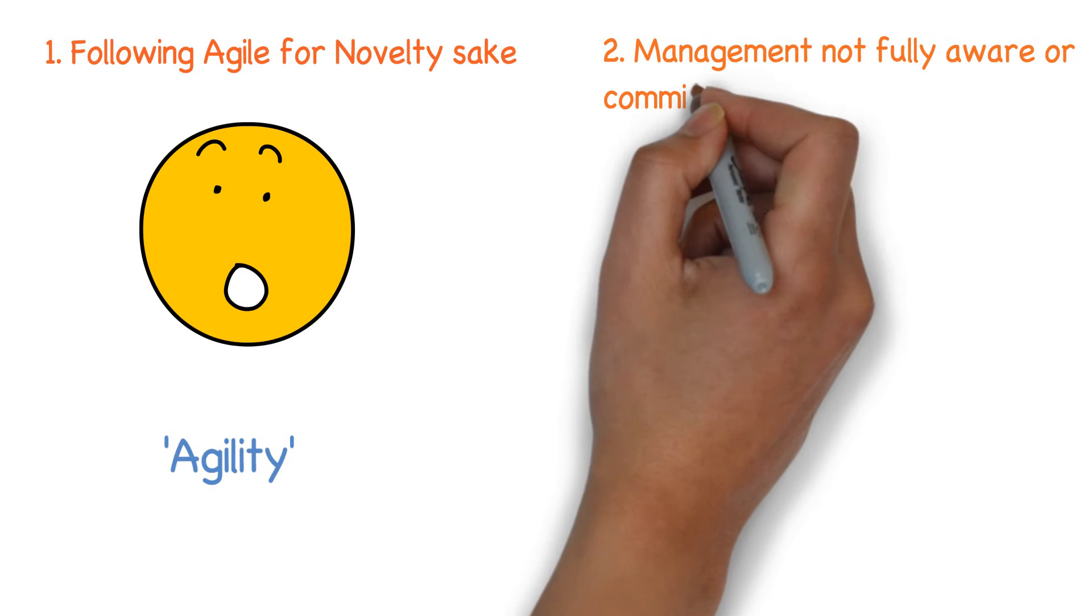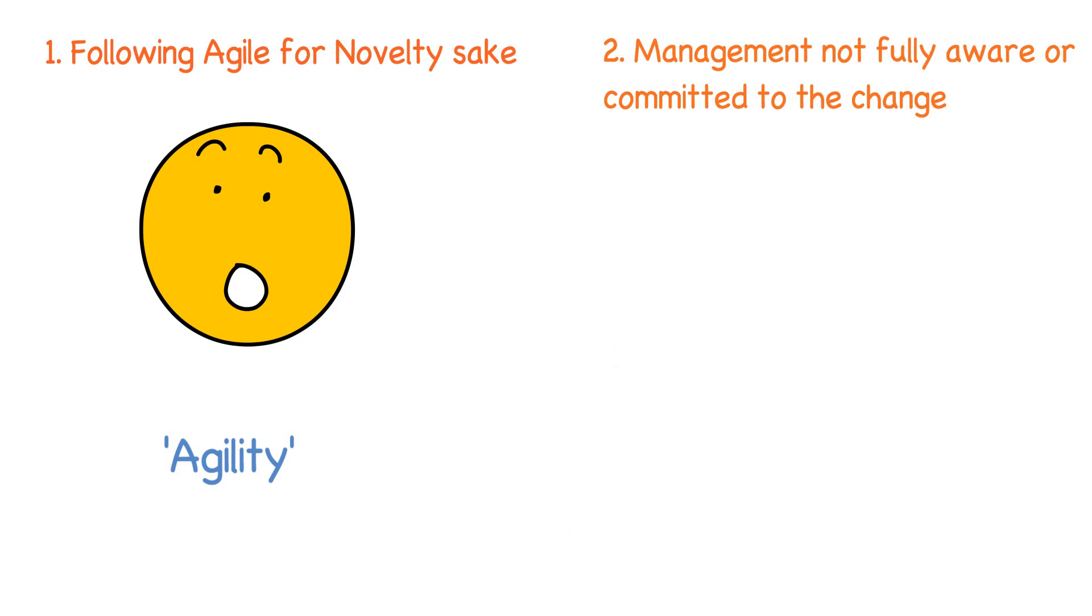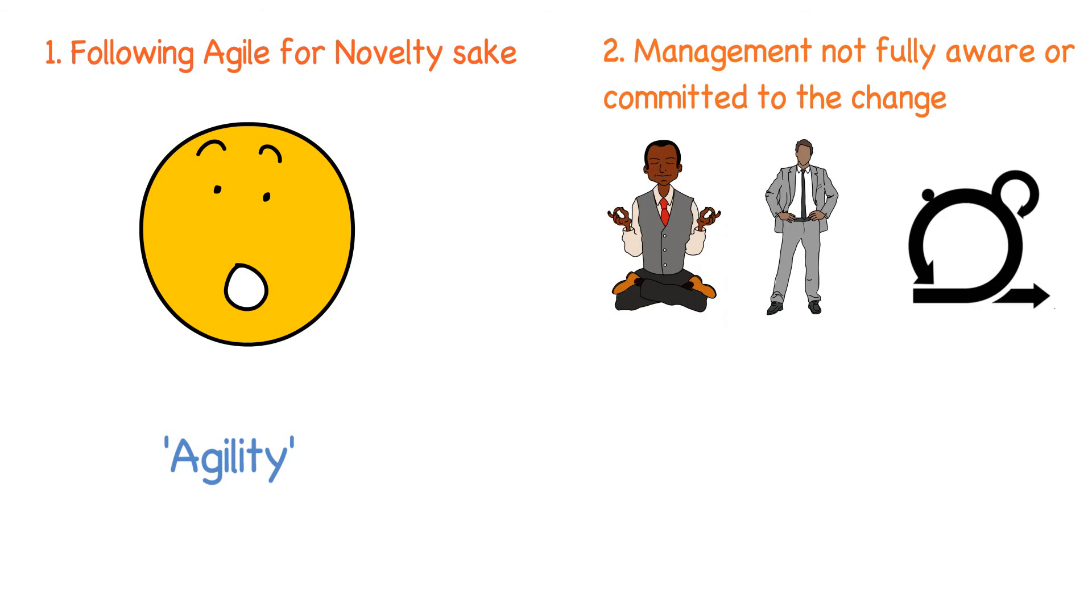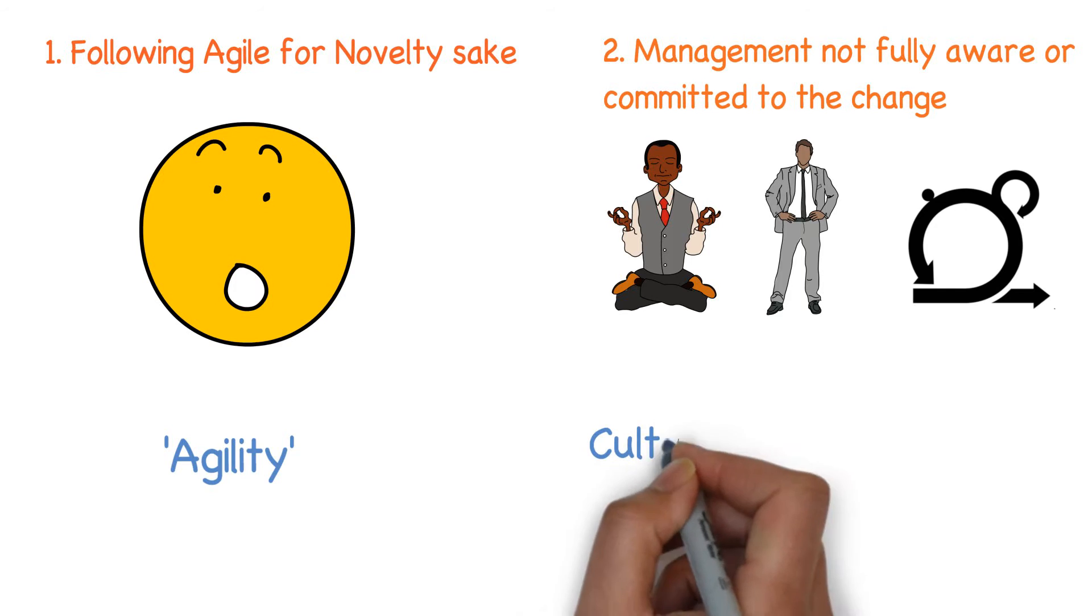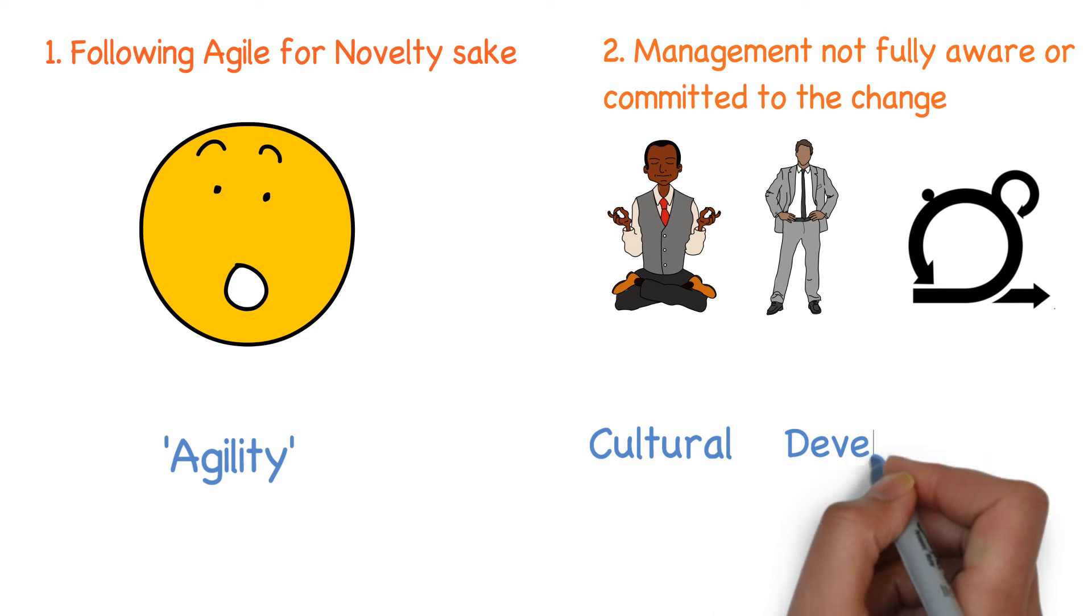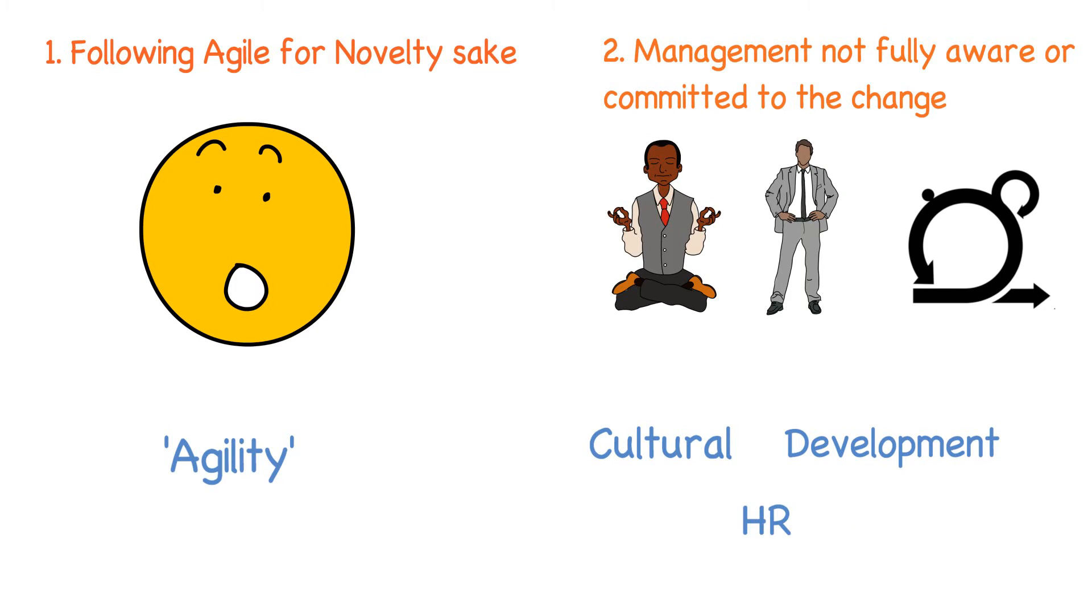Becoming Agile is not just about fancy name changes to Scrum Master or Product Owner or Sprint. The investment goes beyond that and includes cultural transformation, end to end change in the software development flow, changes in HR practices and a lot more.